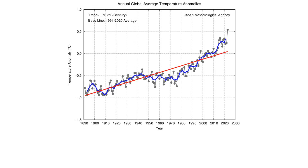This chart from the Japan Meteorological Agency shows how global average surface temperatures have changed since 1891. The blue line is a five-year running average of the data. As you can see, the average global surface temperature has increased approximately 1.3 degrees centigrade, or about 2.3 degrees Fahrenheit, since 1891. But between about 1945 and 1975, there was almost no change in global average surface temperature.